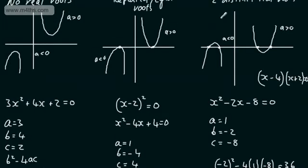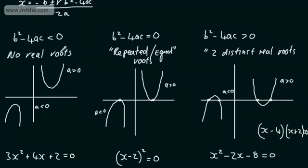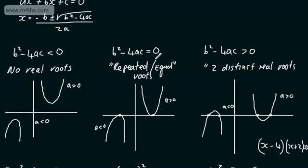So that's the use of the discriminant — three different scenarios. b squared minus 4ac less than 0: no real roots. Equal to 0: repeated or equal roots — think of it as a perfect square. Greater than 0: two distinct real roots.